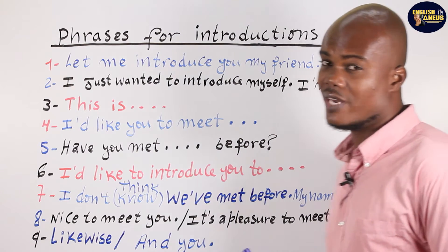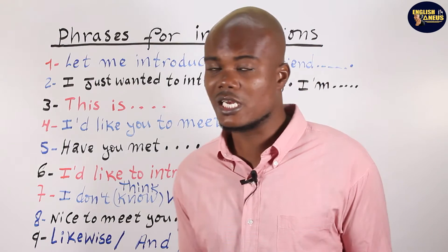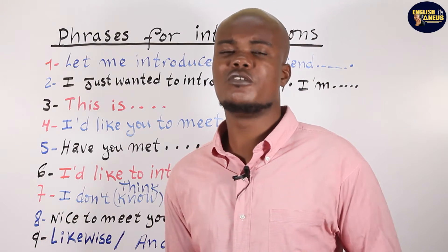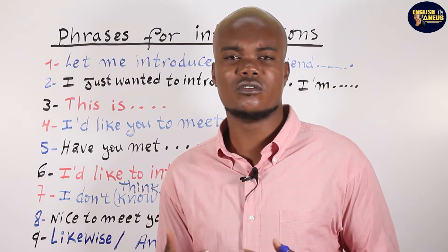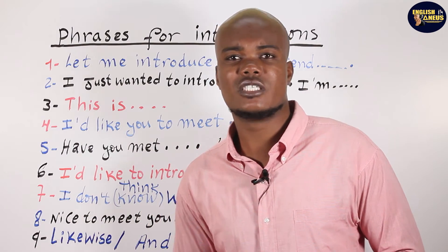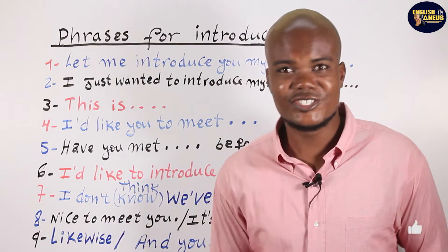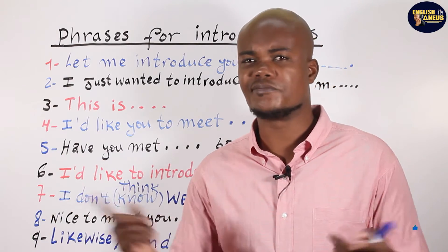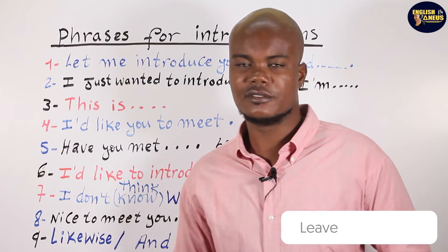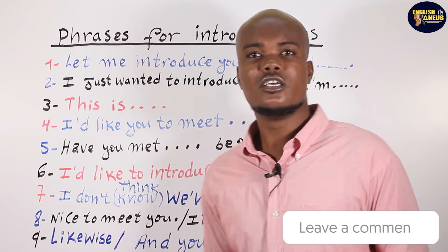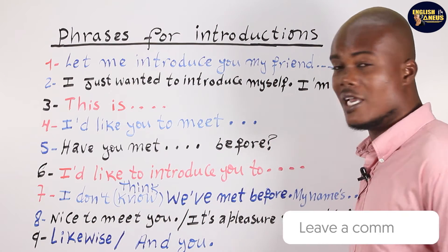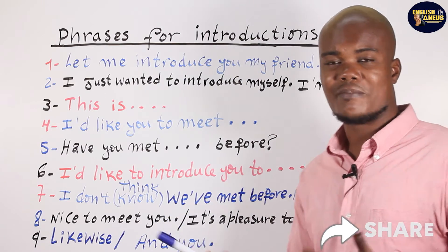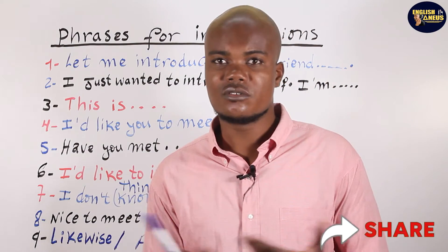So you're at a party or you cross paths with someone, and you just want to introduce yourself. You don't need a very personal relationship. You just greet the person and introduce yourself: 'Nice to meet you.' 'Nice to meet you too.' 'Mwen kontan ankontre ou.' And that's it — you don't need anything overly complicated. You say your name, then: 'Nice to meet you.'